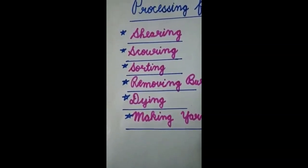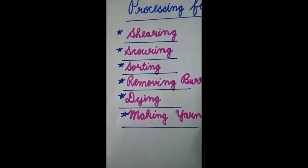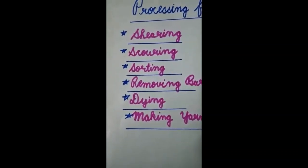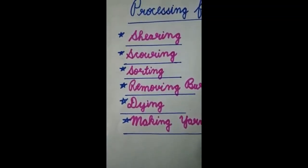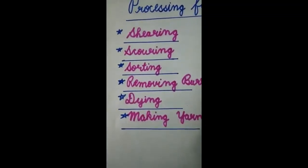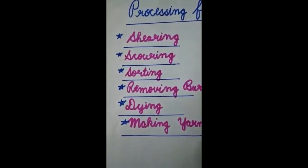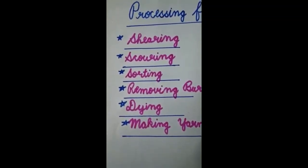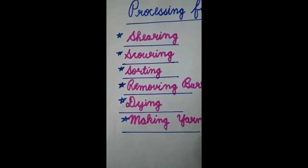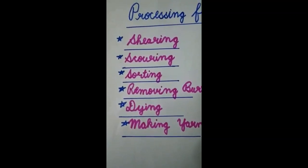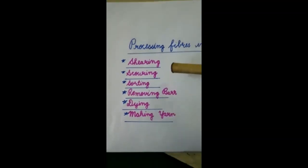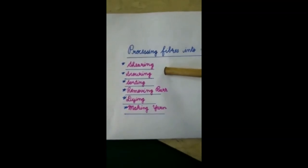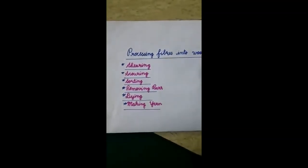The last step involves the fibers being straightened, combed, and rolled into yarn. The long fibers are made into wool for sweaters and the short fibers are woven into woolen clothes. In this way, a total of six steps are involved in the process of fiber into wool.